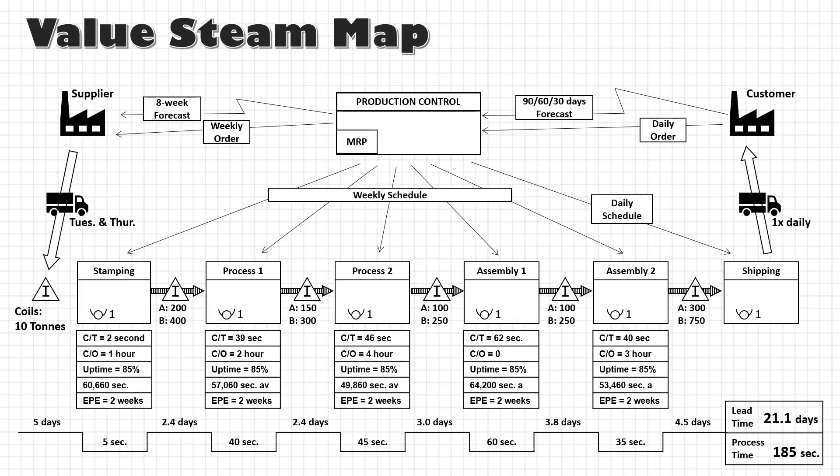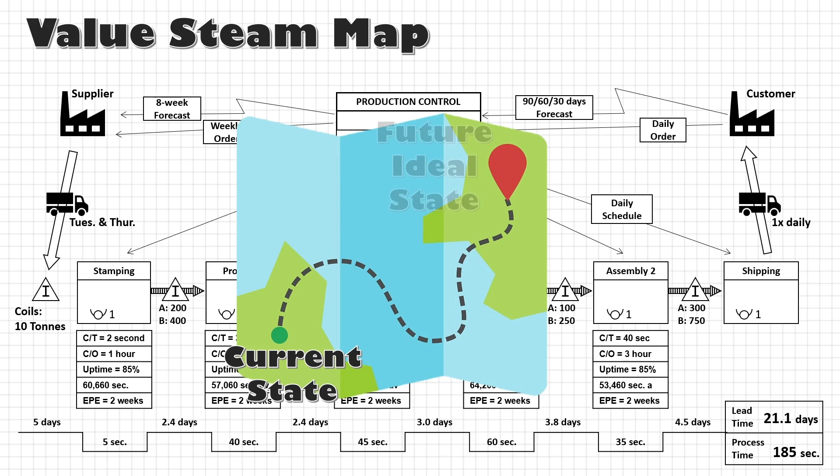This is what a value stream map will look like. Right now we are looking at the big picture, not just individual processes. With the help of this map, we can identify, understand and improve the whole system, not just optimize bits and pieces. We can visualize the flow of material and information. We can identify bottlenecks, delays and non-value added activities. Then we will develop a future ideal state for the value stream — this is the whole purpose of a map, going from one place to another — and an action plan to get there.